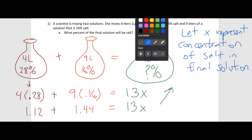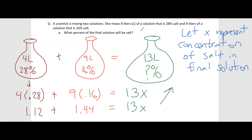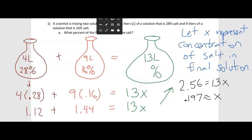If I add 1.12 and 1.44, I get 2.56 is equal to 13x. And if I divide both sides by 13, that is going to give me approximately 0.197 — rounding to three decimal places. So x equals 0.197, which means our percentage, converting the decimal back to a percent, is approximately 19.7%. Our final solution is about 19.7% salt, which is in between the 28% and the 16% that we started with.